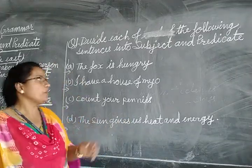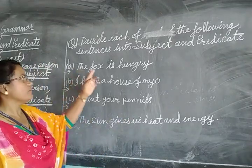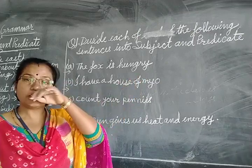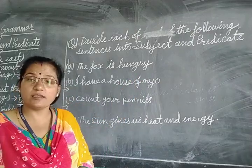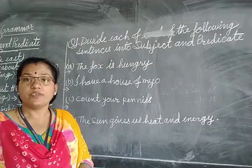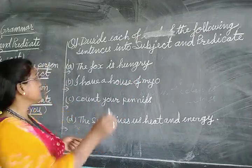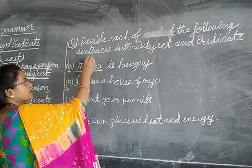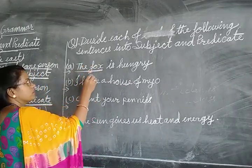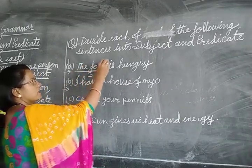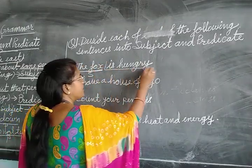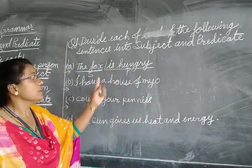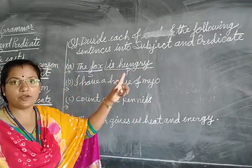Question number one: 'The fox is hungry.' We are talking about the fox, so 'the fox' is the subject. What we are saying about the fox? 'Is hungry' — that is the predicate.